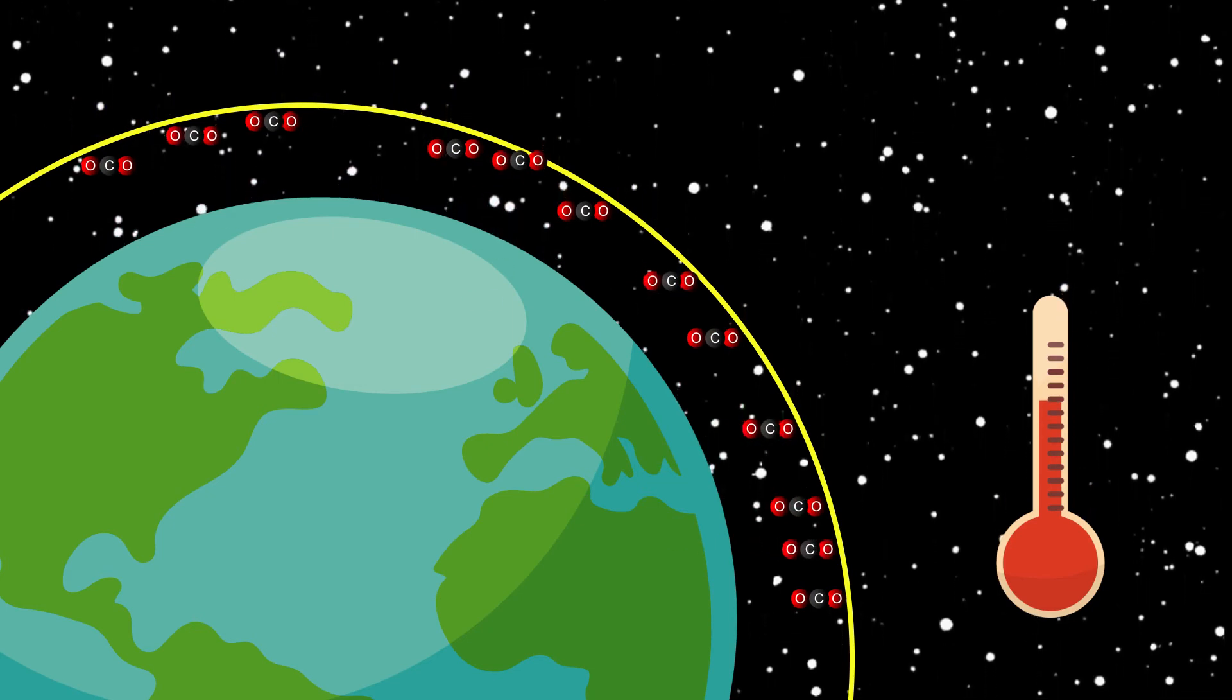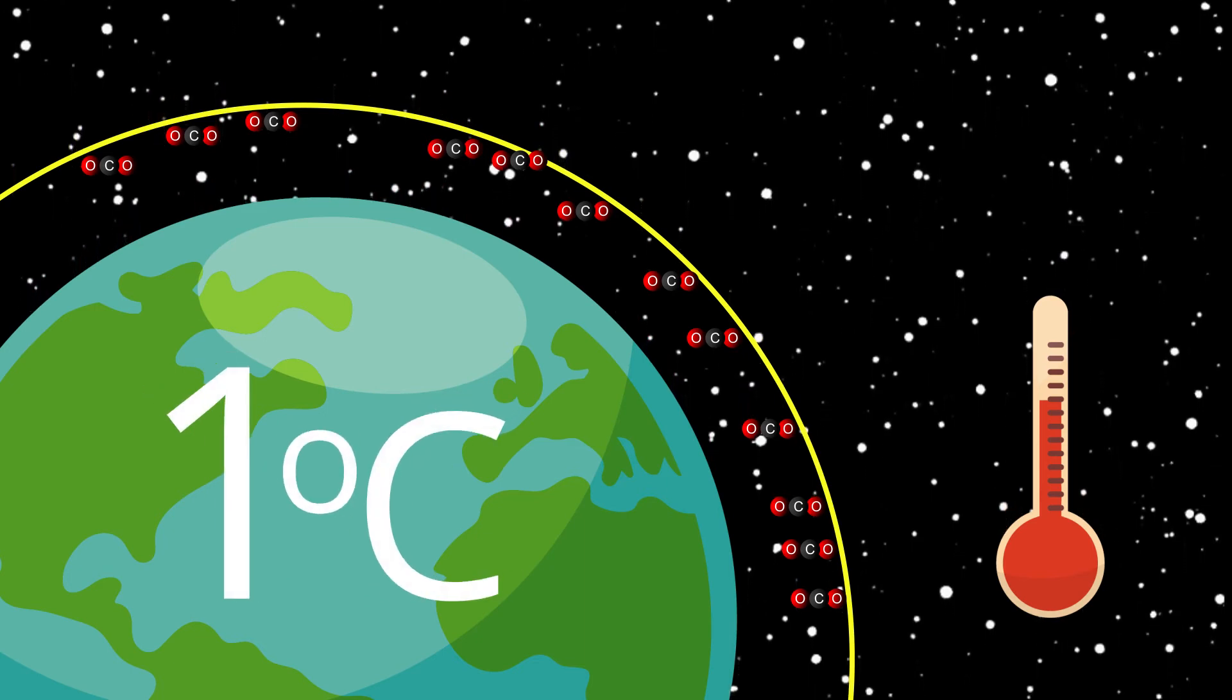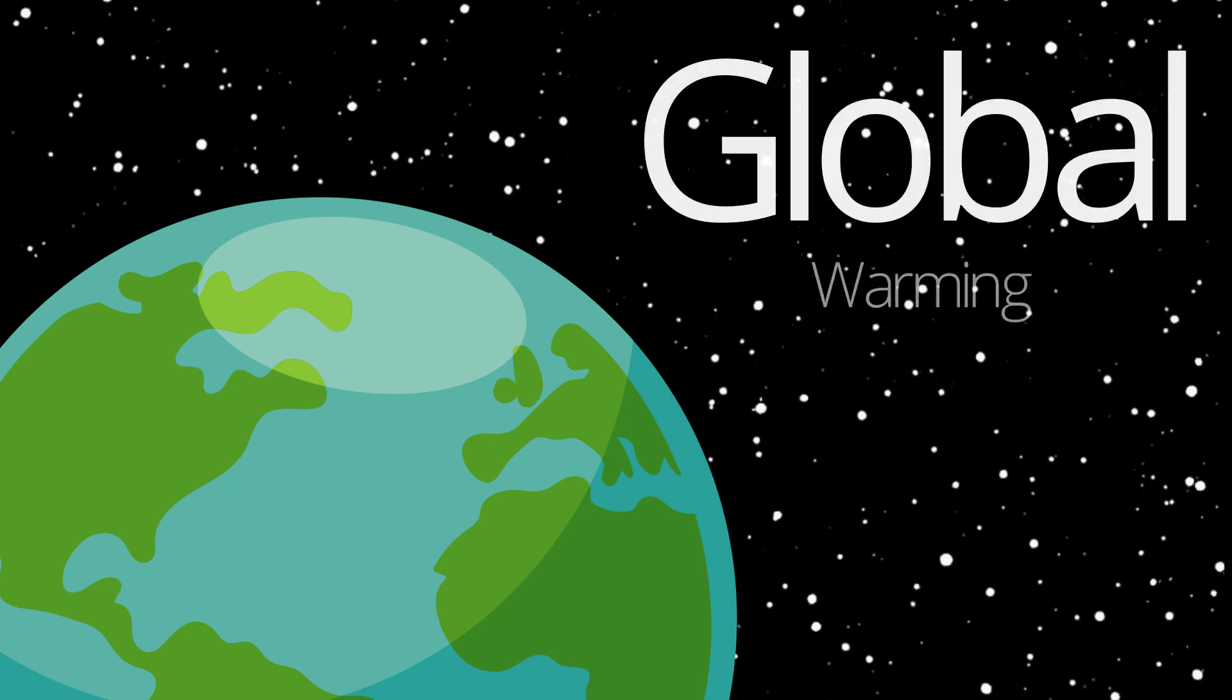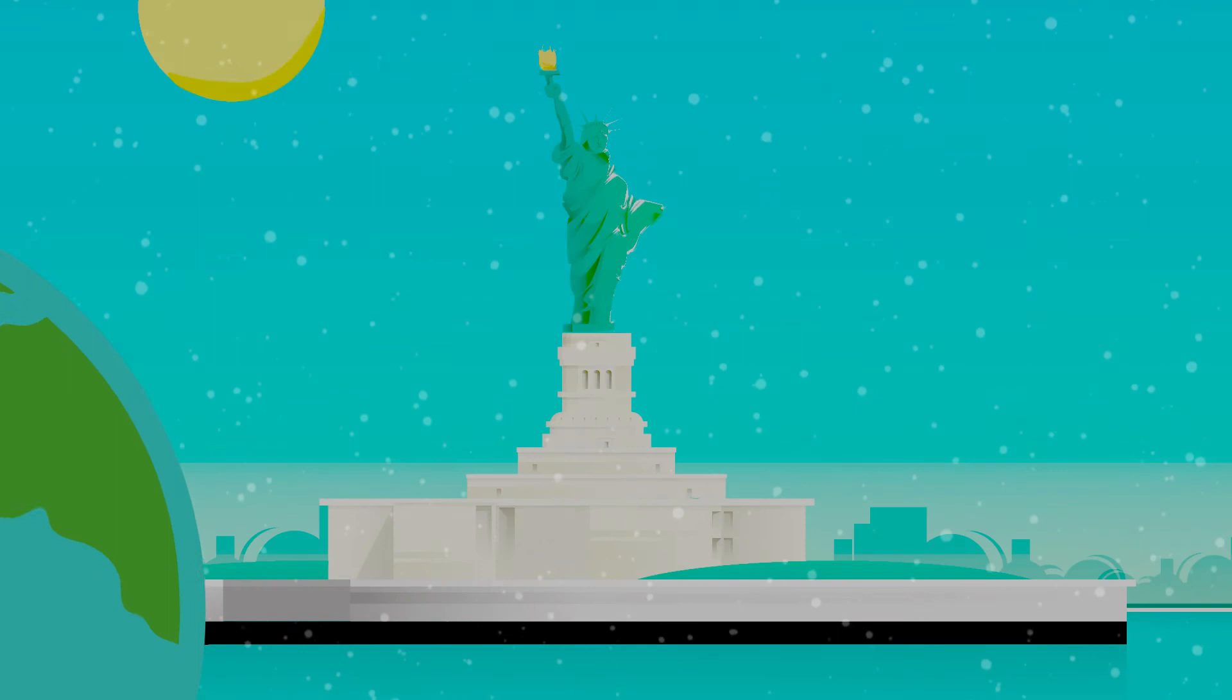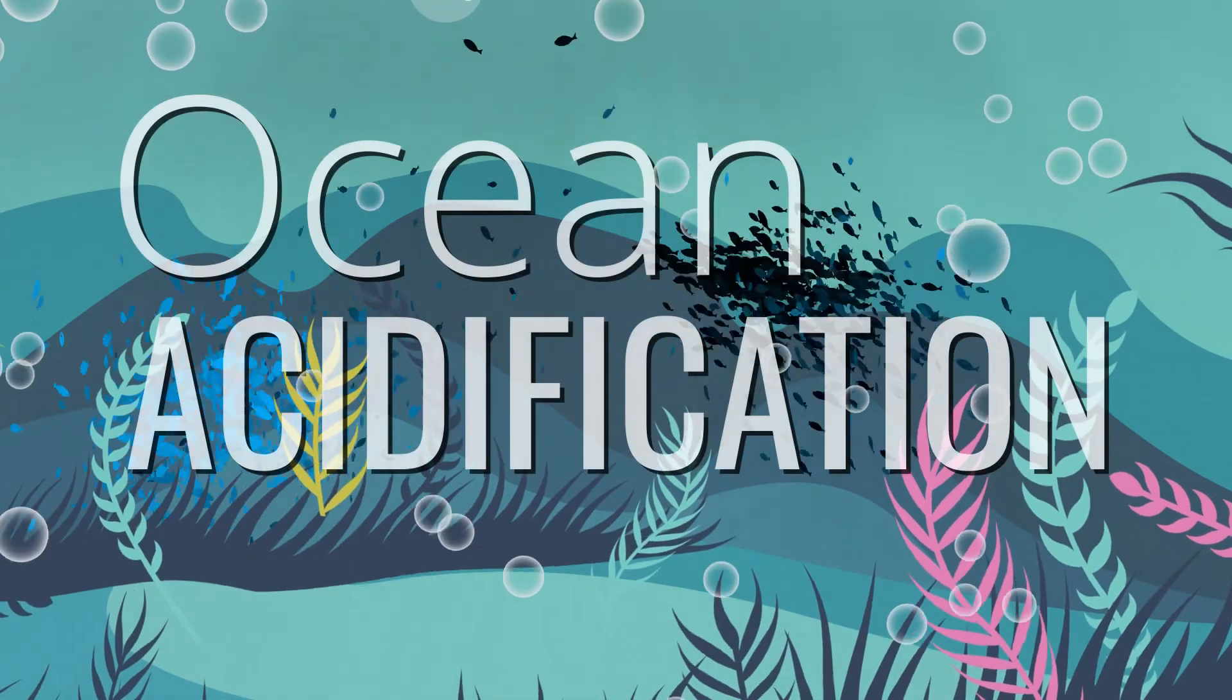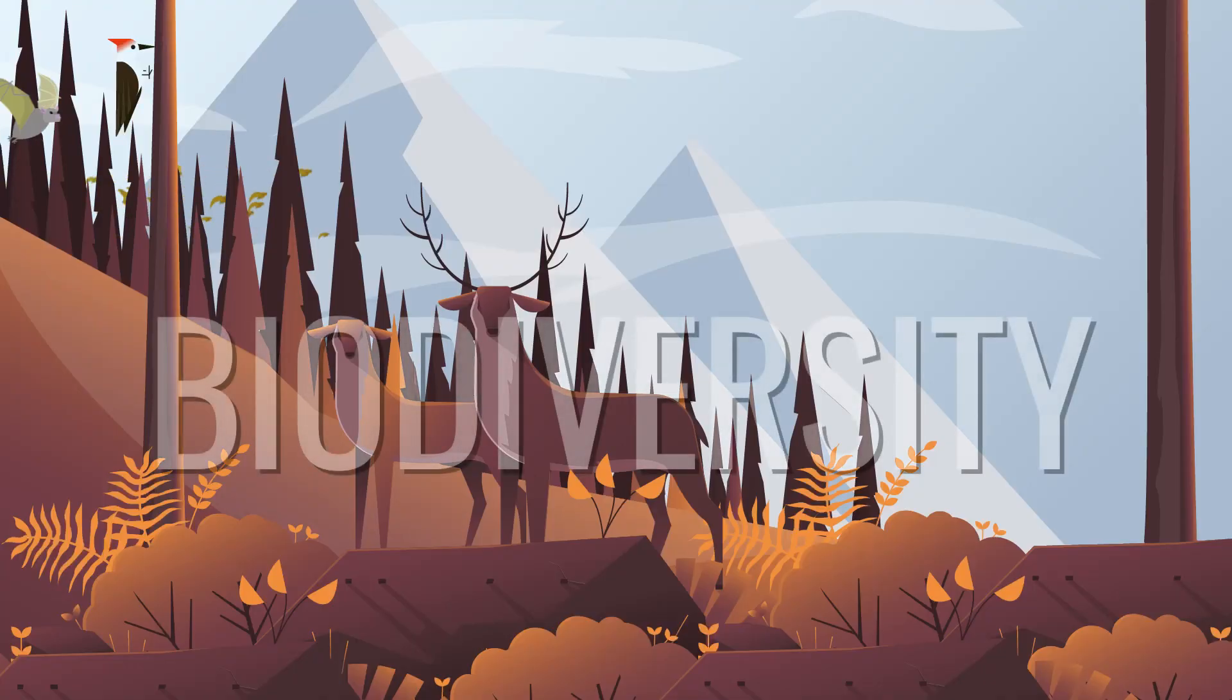The world has already warmed around 1 degree Celsius above its pre-industrial temperatures. The rise in temperature is called global warming. The rise in temperature is associated with climate change, ocean acidification, and biodiversity loss.